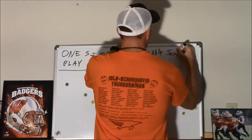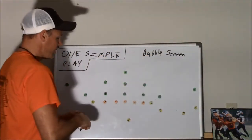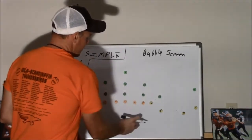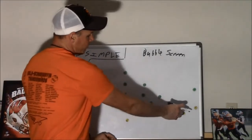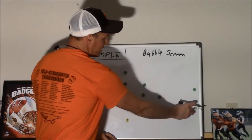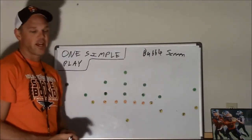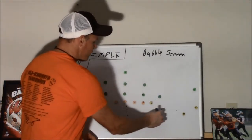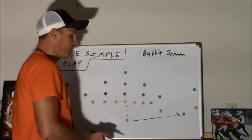Bubble screen, tunnel screen — we've called it bubble in the past. In this, the quarterback's going to be by himself back here. So it's an empty backfield and we're going to take our fullback and put him in the slot to the right and the halfback on the line to the outside here. At the snap, we're just going to throw him a real simple quick pass like this.